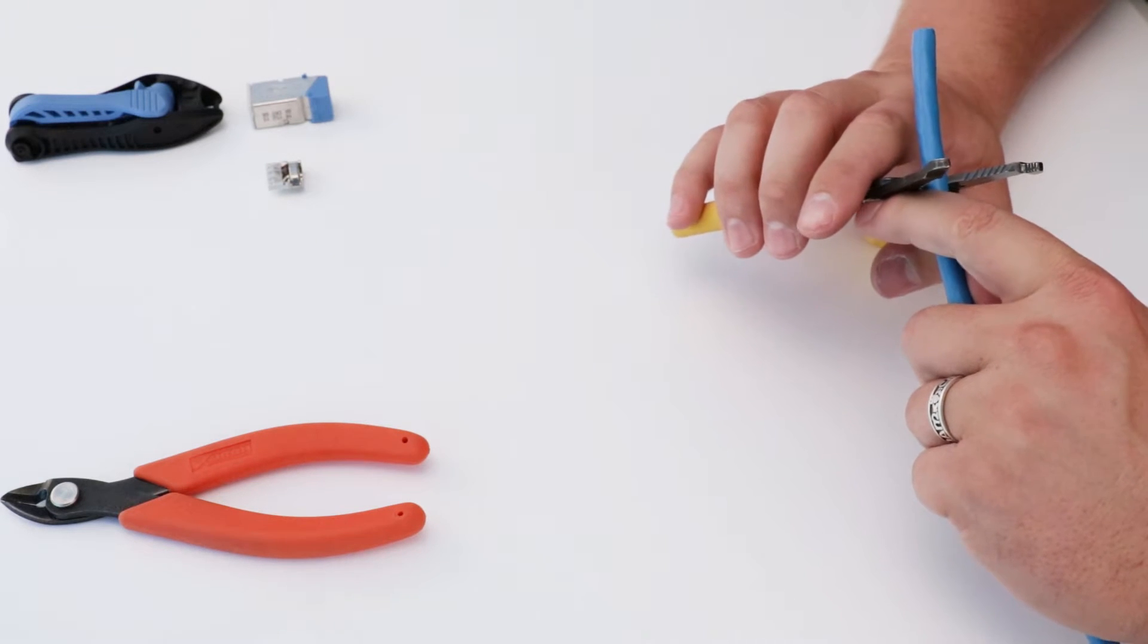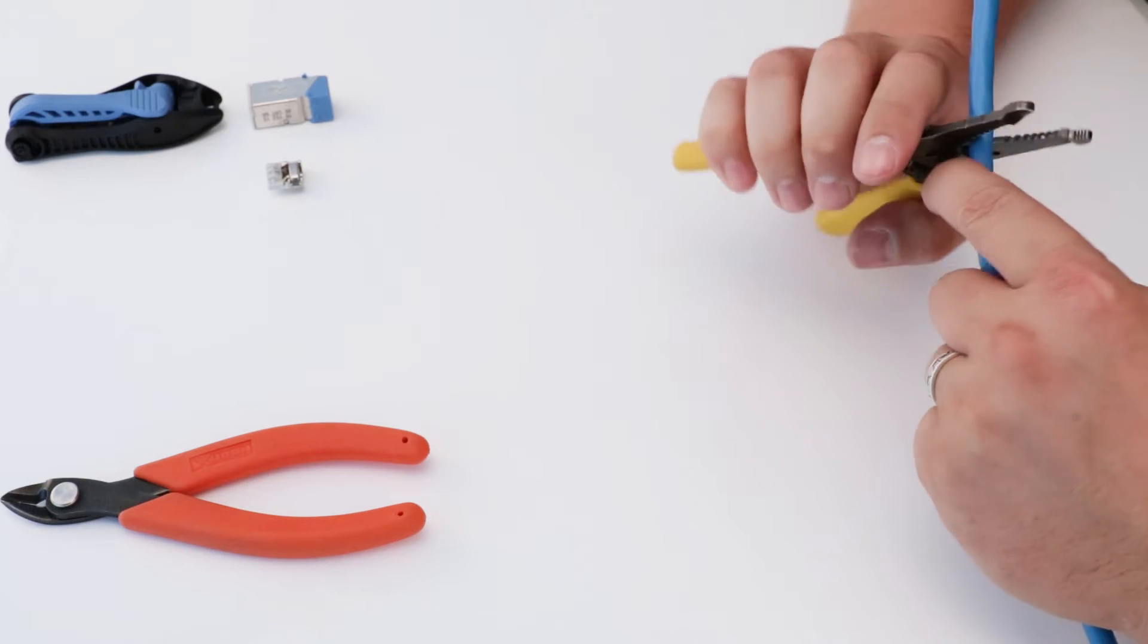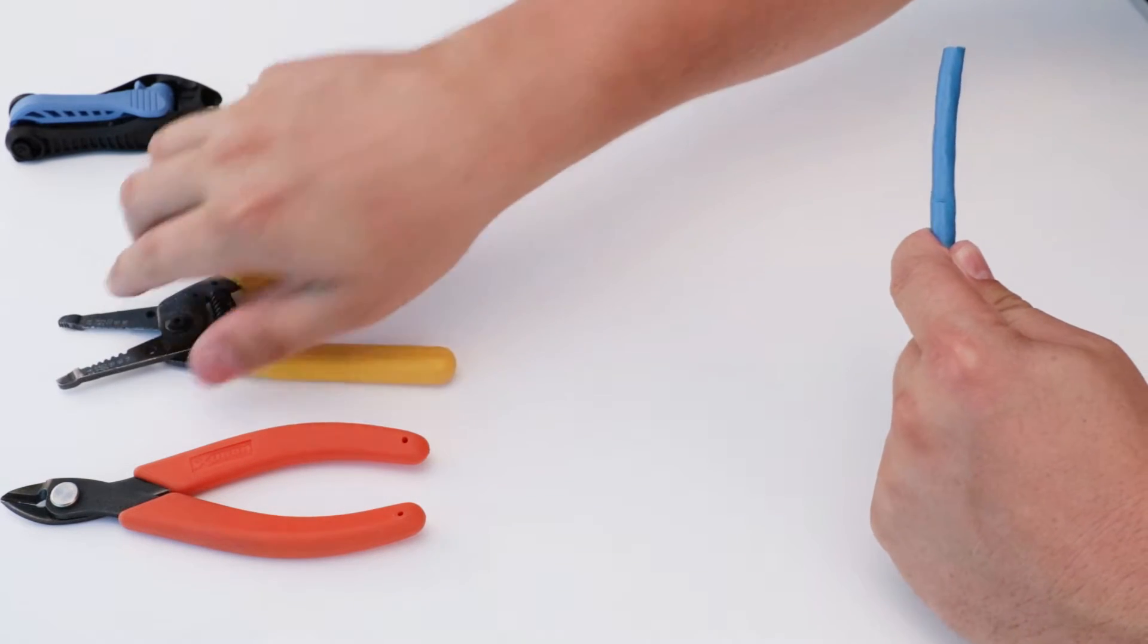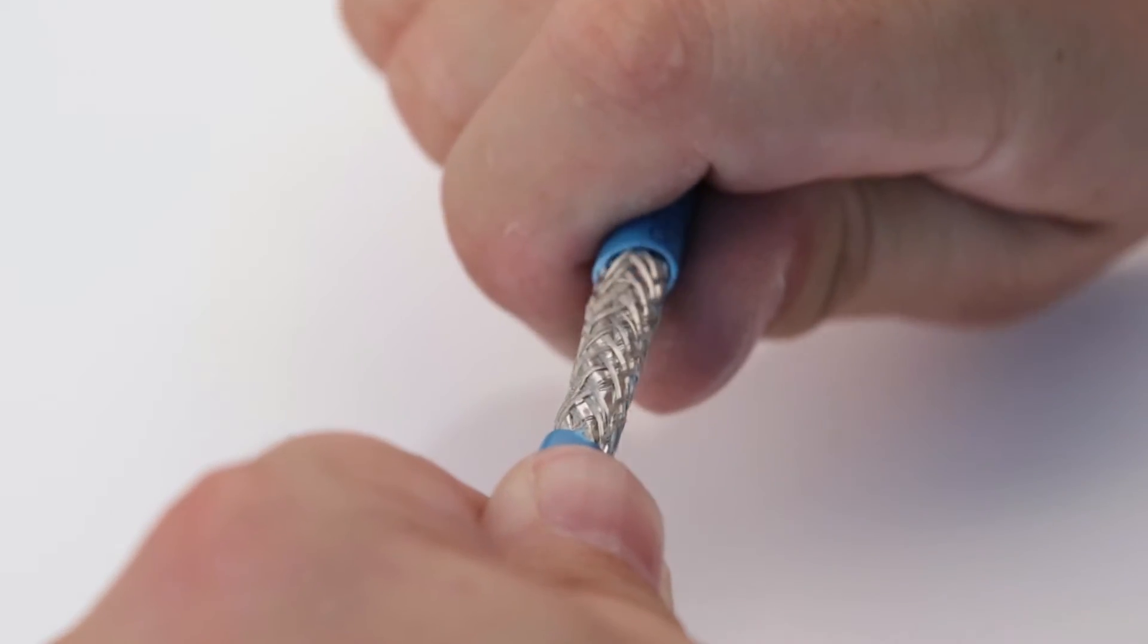First, prepare the cable for termination. Strip the outer jacket of the cable about 2 inches. Do not remove or cut the braided shield.